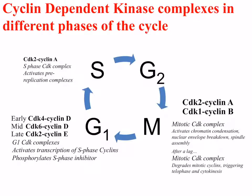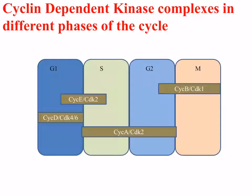Each cyclin-dependent kinase complex is necessary for the initiation of the next phase. Cyclin D, cyclin E, cyclin A, and cyclin B are transcribed and active at distinct times during each cell cycle phase. They combine with different cyclin-dependent kinases to drive the cell cycle through to the next phase.